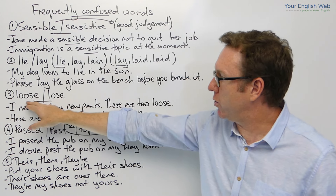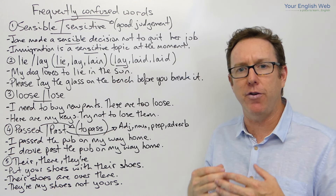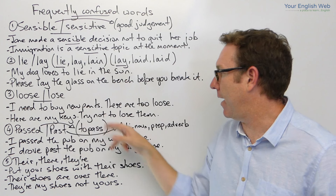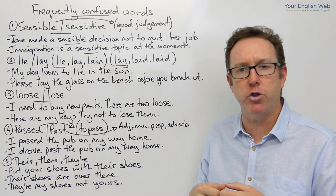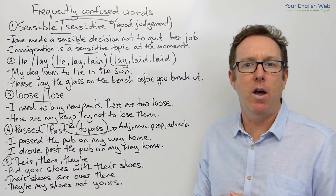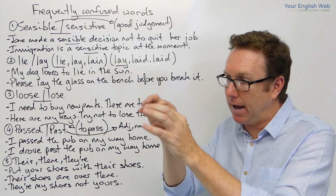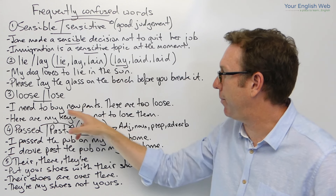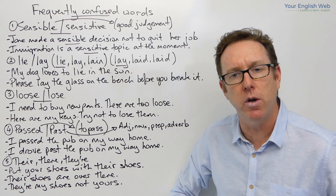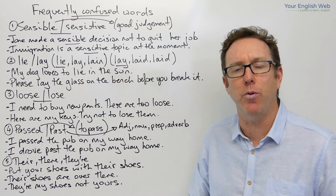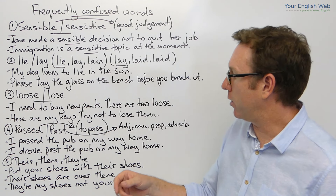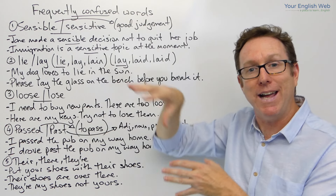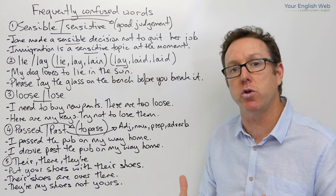Now, the next one is loose and lose. This is a problem that non-native speakers have with English more than native speakers. Loose means that something is too big — it doesn't fit you properly. Or something is not fixed tightly in an area. The example: I need to buy new pants. These are too loose — they're not tight, they don't feel comfortable, there's too much room. We could also say that if this whiteboard is not tight on the wall, it's loose — it moves. It's not tight.